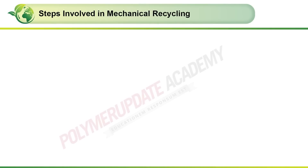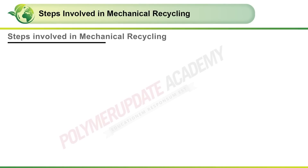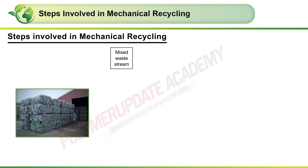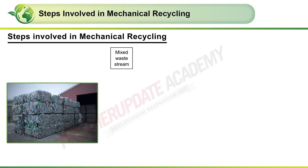Let us look at an animation to understand the steps involved in mechanical recycling. The first stage is cutting or shredding, wherein the mixed waste stream is taken in the bale form and charged to the machine for size reduction.